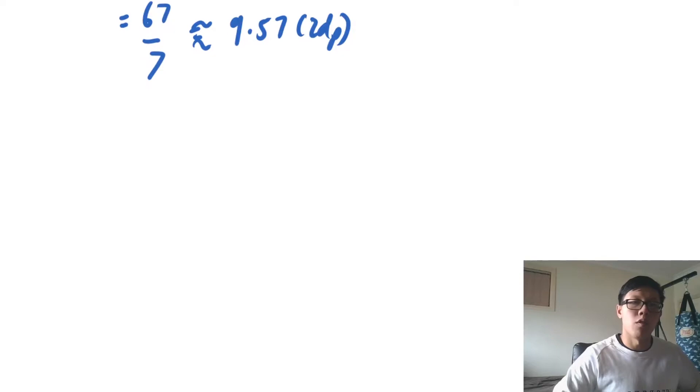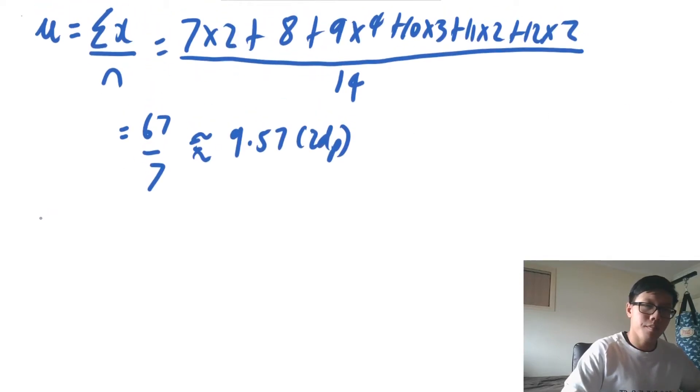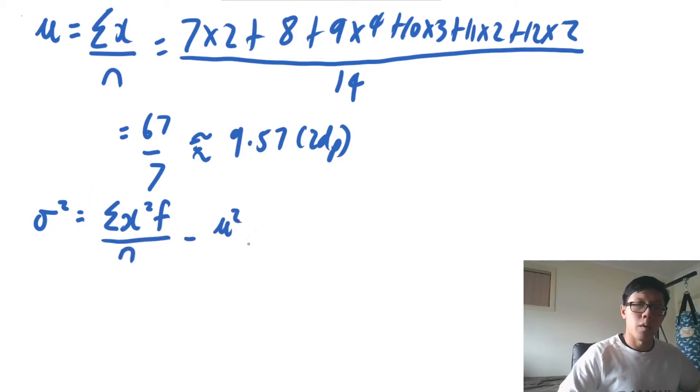So we have our mean, now we can move on to variance. Let's use the new formula which is the sum of each unique data point squared multiplied by its frequency divided by n take away the mean squared.